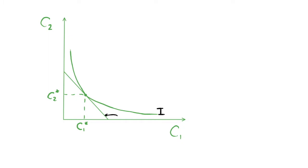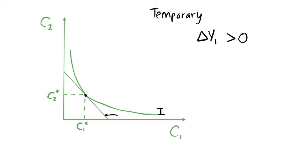The optimal point initially is given by the tangency condition, so we initially have consumption C1 star and C2 star. Now let's imagine that we have a temporary shock to our current income — a shock to income in period one, Y1. We're going to change income in period one by some positive amount. Because this change is temporary, we keep income in period two, Y2, constant. So the change in Y2 is zero, but we have some positive change to income in period one.